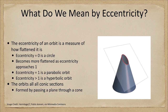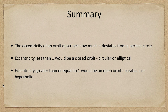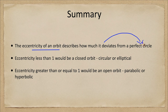So let's finish up with our summary. The eccentricity of an orbit describes how much it deviates from a perfect circle. An eccentricity of zero is a circle, and an eccentricity of less than one gives a closed orbit.